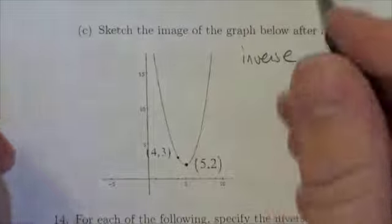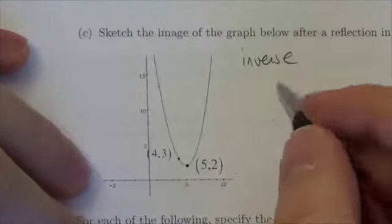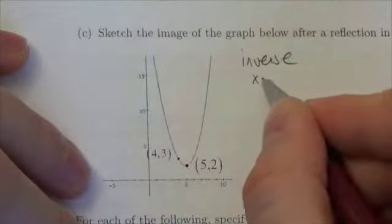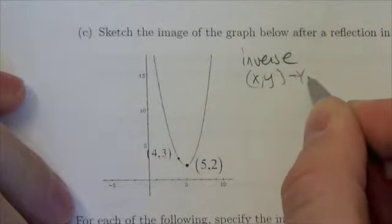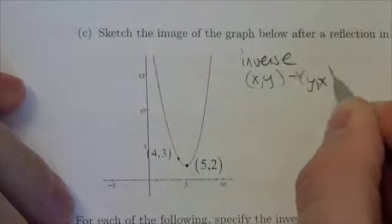And so when we reflect this in the line y equals x, essentially what we're doing is we're taking x comma y and we're swapping those points to get y comma x.